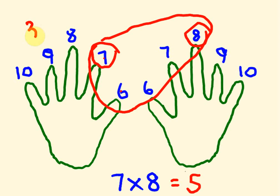Over here we have three fingers. On the outer, over here we have two fingers on the outer. Three times two is six. The answer is 56.